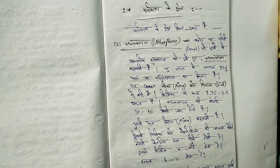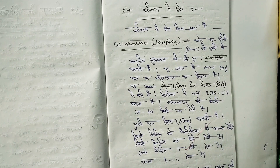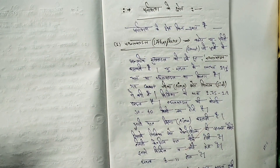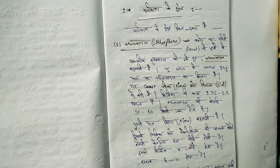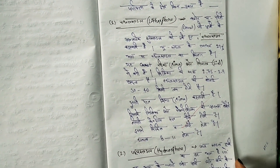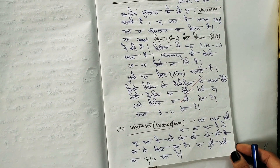You should know the components of paryavaran — these are normally known to everyone: isthalmandal (lithosphere), jalmandal (hydrosphere), vayumandal (atmosphere), and jeevmandal (biosphere). If you want to read and write about these in English — lithosphere, hydrosphere, atmosphere, and biosphere — you can write about them in detail.